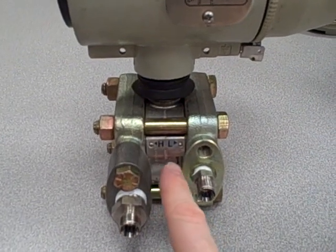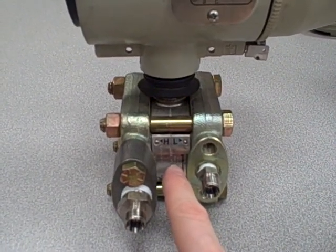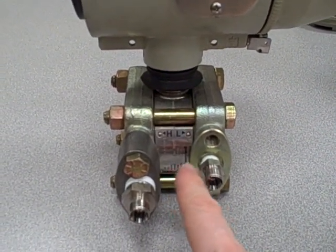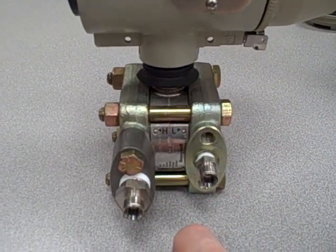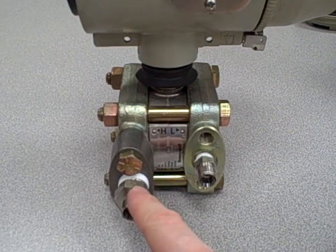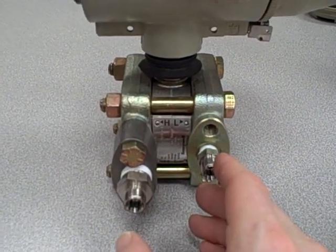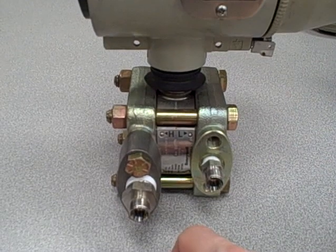So, the idea with the high and low labels is that we are describing the direction of impact that an applied pressure will have on the milliamp signal. It does not necessarily mean that the pressure at the high side will be greater than the pressure at the low. It may be, it may not. It really depends on the application.